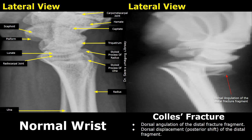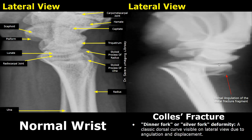This is a lateral view of a different case of Collis fracture. There is dorsal angulation and dorsal displacement of the distal fracture fragment. The dinner fork deformity is also present in this case due to the dorsal displacement and angulation of the distal fracture fragment, which forms a dorsal curve resembling a fork.